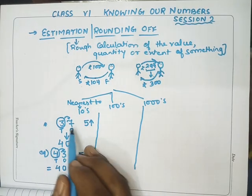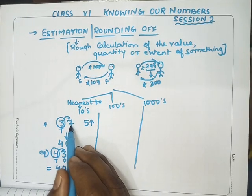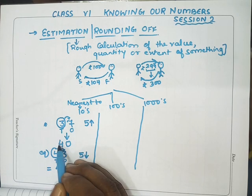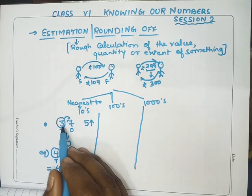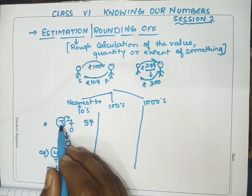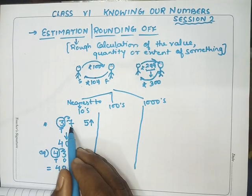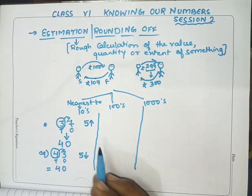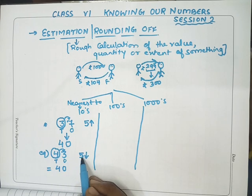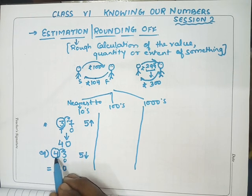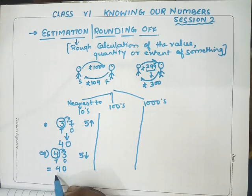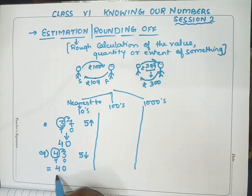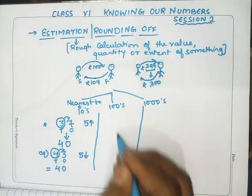That means when the right-hand digit is greater than 5, we add 1 to the left-hand digit — the tens place — and the ones place becomes 0. When the right-hand digit is less than 5, the tens place digit stays the same and the ones place becomes 0. So the answer is simply 40.